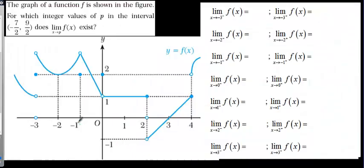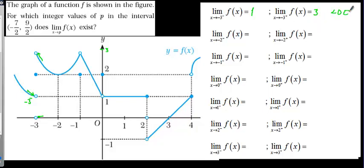On this graph, we are getting closer to minus 3 from the negative side. The function value is getting closer to 1, so that limit equals 1. From the positive side of minus 3, the value is getting closer to 3. So the limit doesn't exist — because the left-sided limit, which is 1, is not equal to the right-sided limit, which is 3.